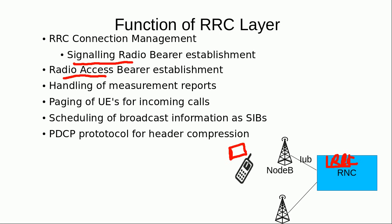If there is a call for the mobile station, it is the RRC entity that pages the mobile about the incoming call. Similarly, broadcast information that the Node B or network sends to mobiles in the area of this radio network controller is arranged and scheduled in the form of system information blocks — this procedure is also handled by the RRC.